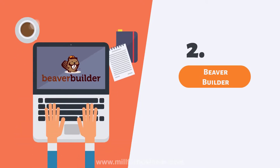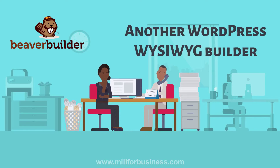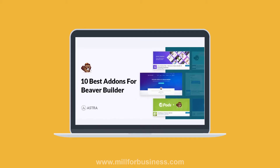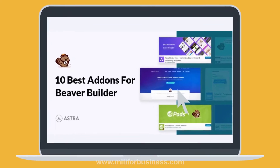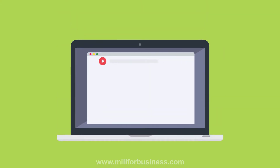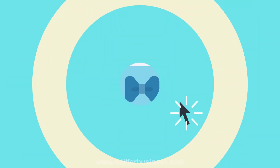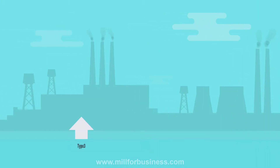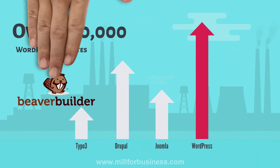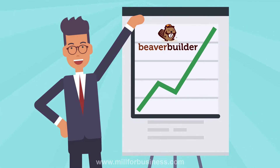2. Beaver Builder. Beaver is another WordPress builder that comes with WYSIWYG functionality. With this front-end editor, your coding skills do not matter — creating a stunning website is possible with simple drag-and-drop manipulations. Beaver Builder has an intuitive and clear interface which makes working easy for anyone. Over 500,000 WordPress websites have been built with Beaver Builder so far, and this number is ever-growing.